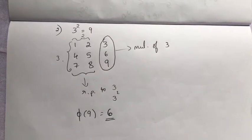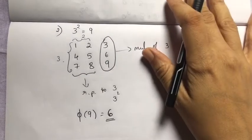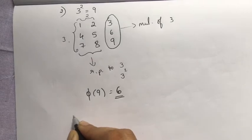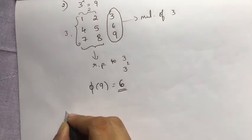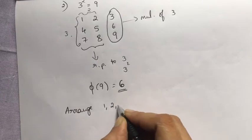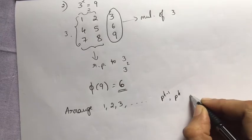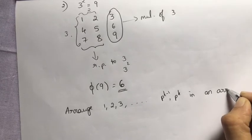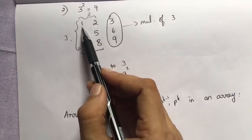In general, if you have p^k, arrange the numbers 1, 2, 3, up to p^k in an array with p columns: first row is 1, 2, ..., p; second row is p+1, p+2, ..., 2p; continuing up to p^(k-1)+1, p^(k-1)+2, ..., p^k. The last column contains the multiples of p, and the rest are relatively prime to p, in fact relatively prime to p^k.